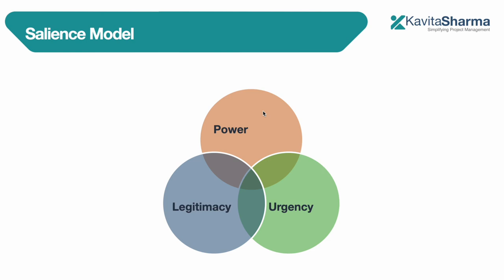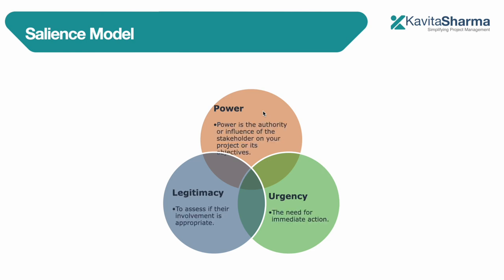The salience model defines and manages stakeholders broadly through three dimensions. These three dimensions are power, legitimacy, and urgency. Let's understand what each of these means.